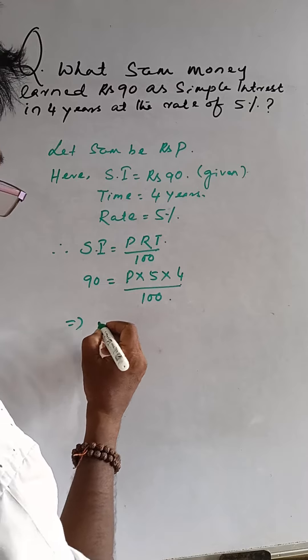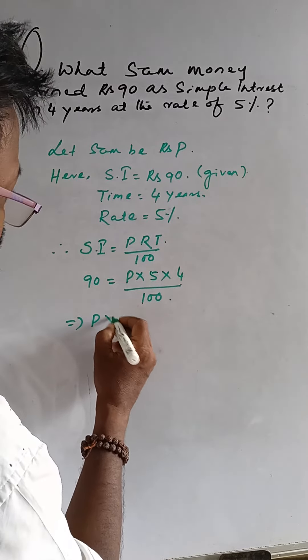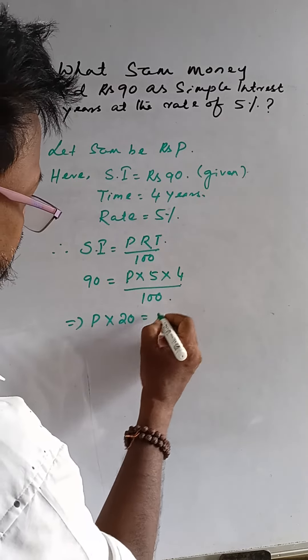Now this is P into 20 is equal to 100 into 90. Therefore, P is equal to 100 into 90 divided by 200.